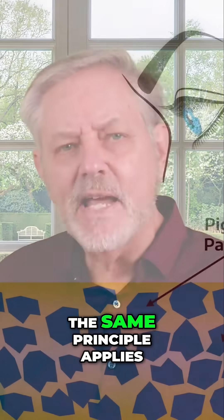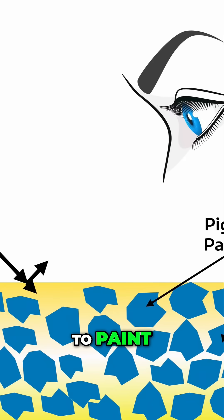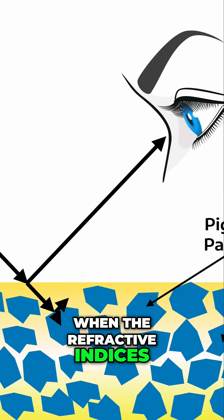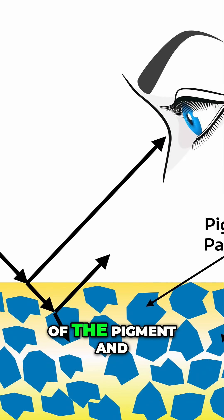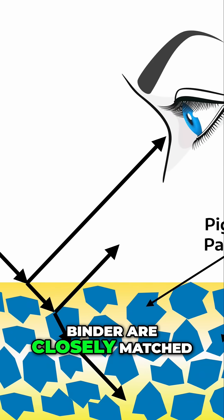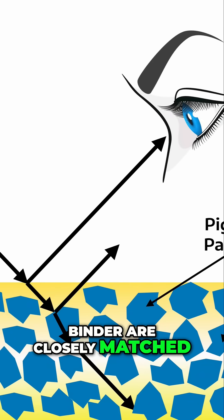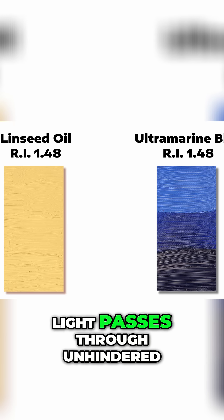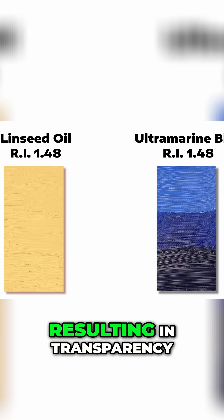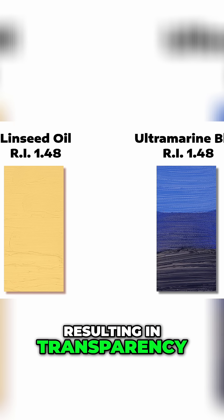The same principle applies to paint. When the refractive indices of the pigment and binder are closely matched, light passes through unhindered, resulting in transparency.